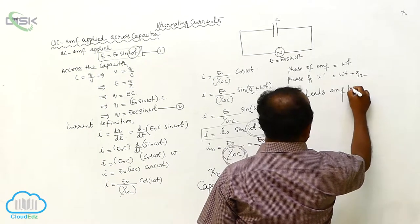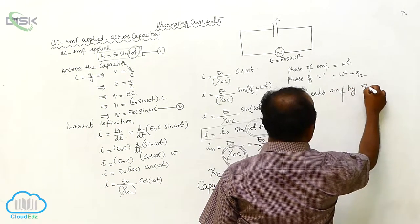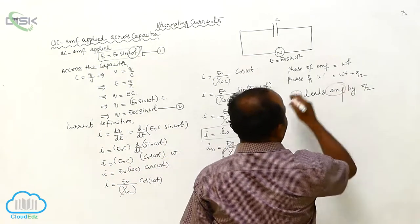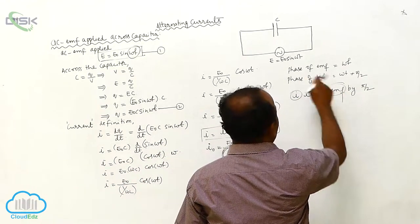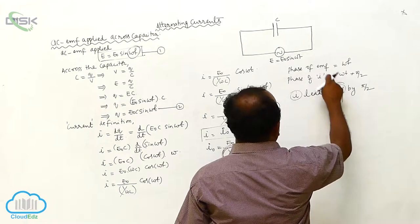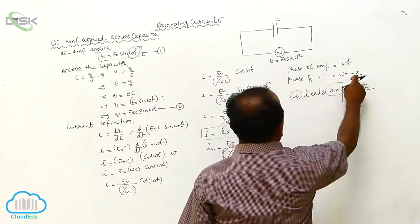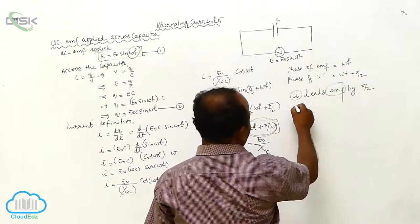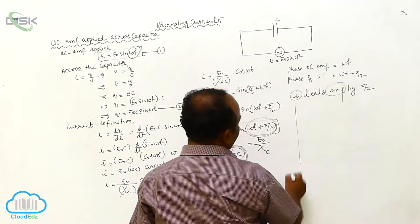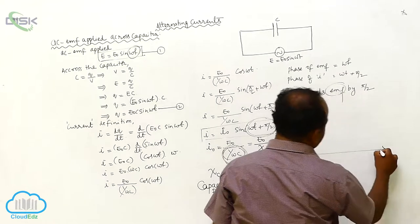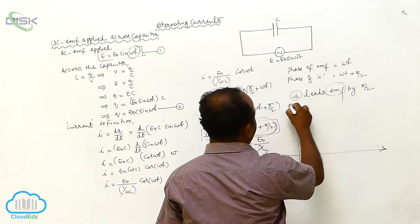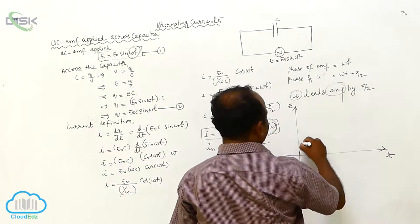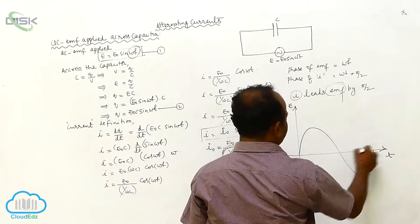Therefore, the current leads the EMF by 90 degrees. Since the current phase is ωt + π/2, which is ahead, the current is forward with respect to the phase — current leads EMF by 90 degrees. Now let us look at the graph, which plots EMF against time.